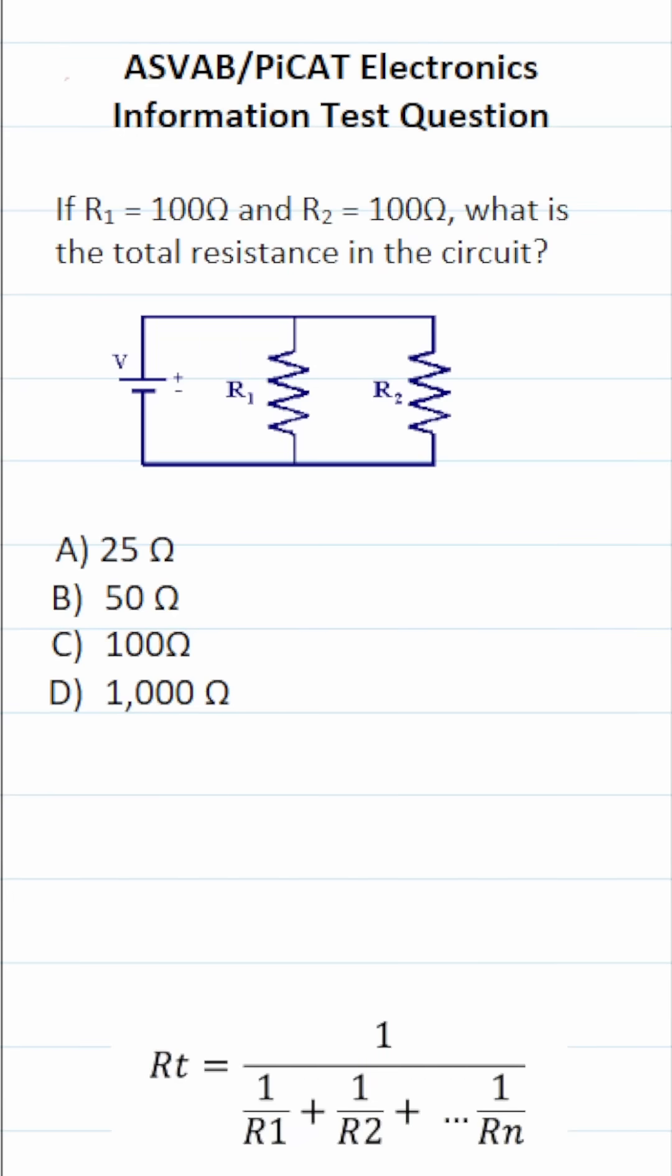This electronics information practice test question for the ASVAB and PyCat says, if R1 equals 100 ohms and R2 also equals 100 ohms, what is the total resistance in the circuit?